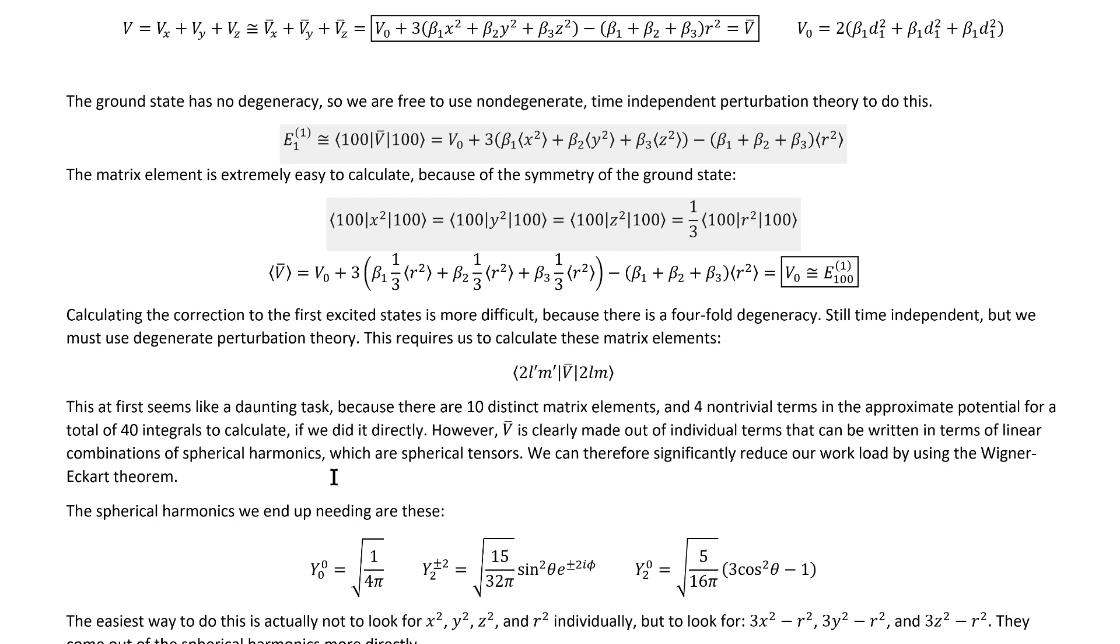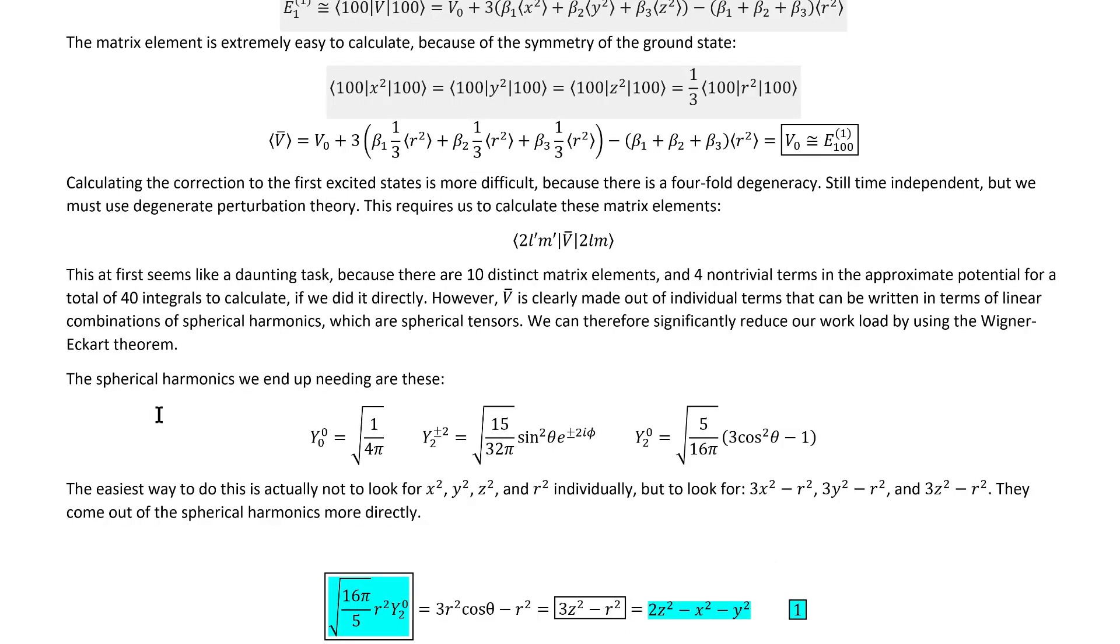Fortunately, however, V-bar is clearly made out of individual terms that can be written in terms of linear combinations of spherical harmonics, which are spherical tensors. We can therefore significantly reduce our workload with these integrals by using the Wigner-Eckart theorem. The list of spherical harmonics we actually end up needing to rewrite the potential in terms of spherical tensors are actually just these.